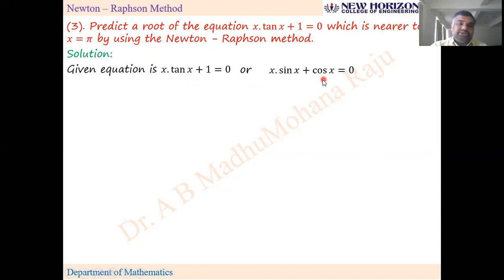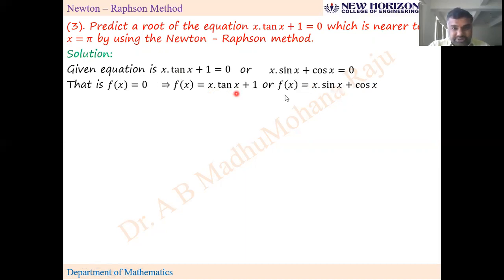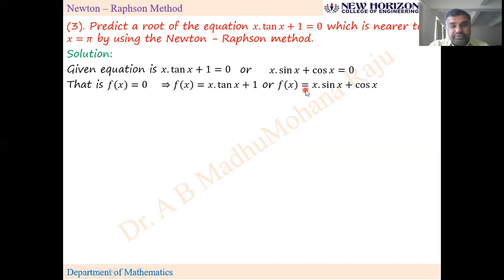The reason for rewriting is that differentiating x·tan(x) gives sec²(x), which can cause confusion when operating on a calculator. You can write sec²(x) as 1/cos²(x), but to avoid confusion, convert tan to sin and cos. So f(x) is either x·tan(x) + 1 or x·sin(x) + cos(x). Use the same f(x) consistently with its corresponding f'(x). With x₀ = π, apply the Newton-Raphson formula.